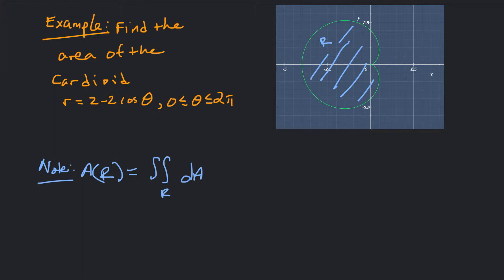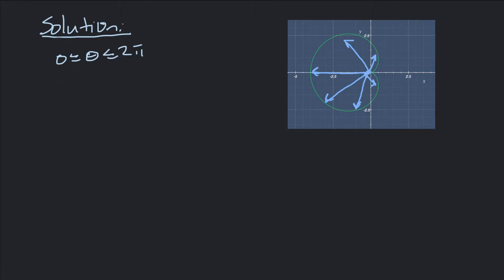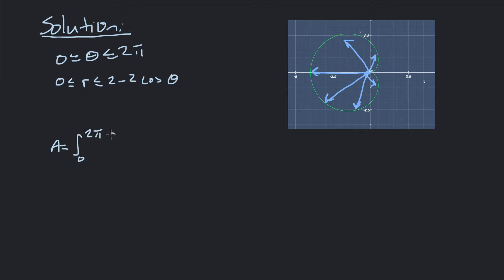Once we understand conceptually how to get the area, it's pretty straightforward — just set up the bounds and integrate. Theta goes from 0 to 2π. R goes from the origin out to the curve, which is 2 - 2cos(θ), so the bounds for r are 0 to 2 - 2cos(θ). The area equals the integral from 0 to 2π, then the integral from 0 to 2 - 2cos(θ), of r dr dθ in polar coordinates.